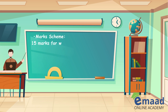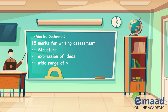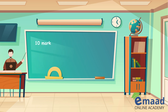There are 15 marks for writing assessment. These 15 marks will be based on structure, expression of ideas, wide range of vocabulary that you use, spelling, punctuation, and grammar. Your answer should be well structured — the organization we will discuss later on — and you should use a wide range of vocabulary, with correct spelling, grammar, and punctuation.